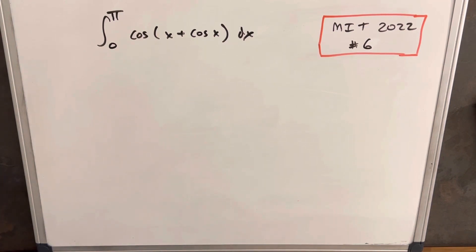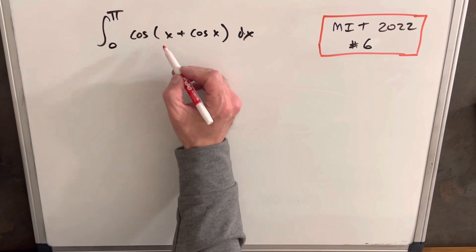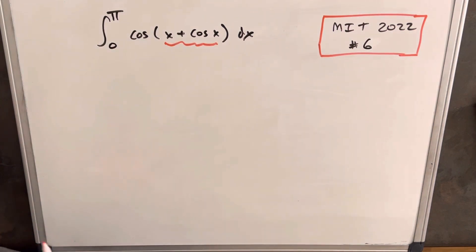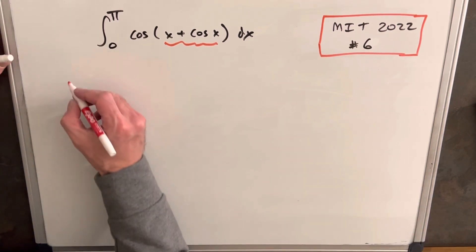We have the integral from pi to 0 of cosine x plus cosine x dx. What I noticed to start is with a trig function, when the input is something complicated, that's a problem. So right off the bat, that's a real problem. But what we do have is we have this nice formula, which we'll go over now.